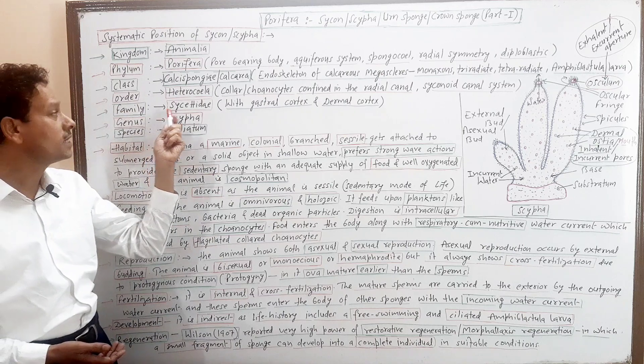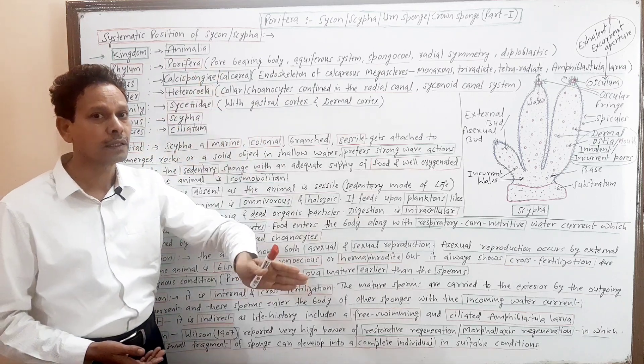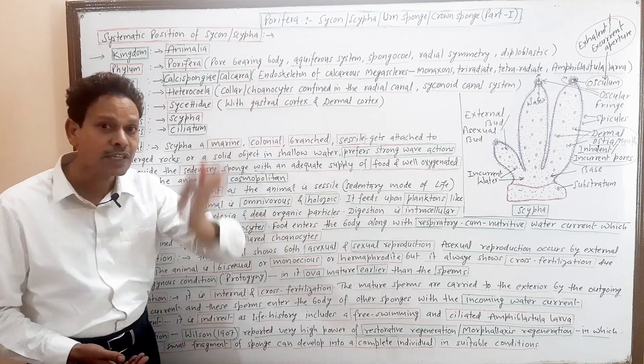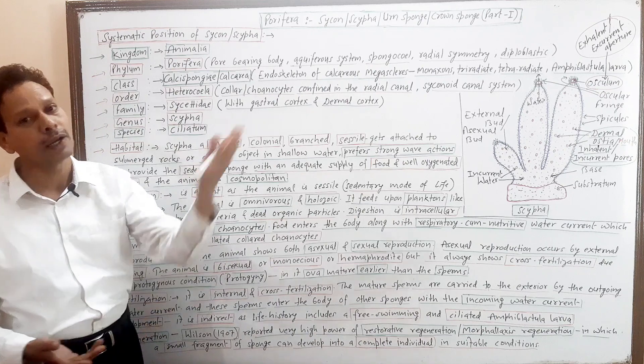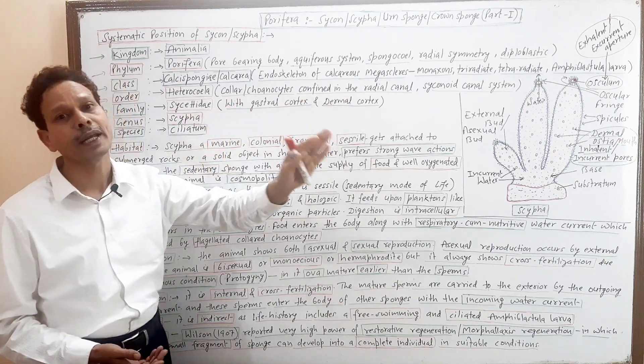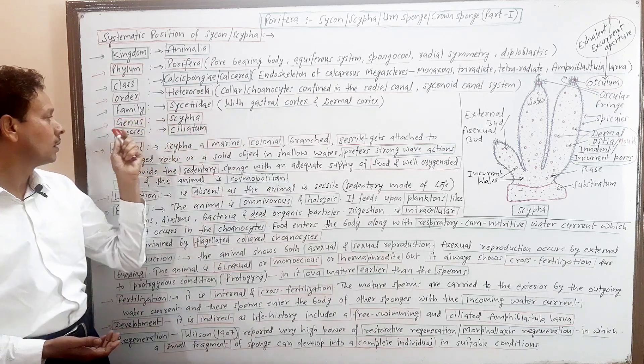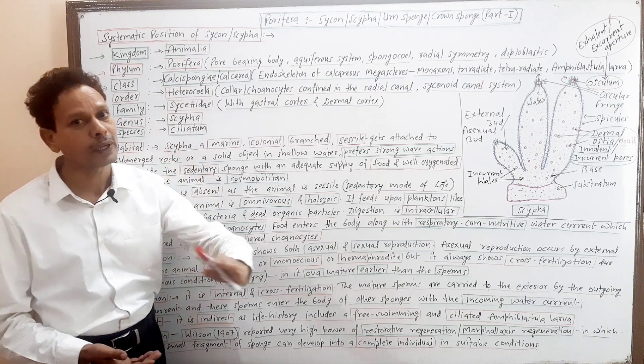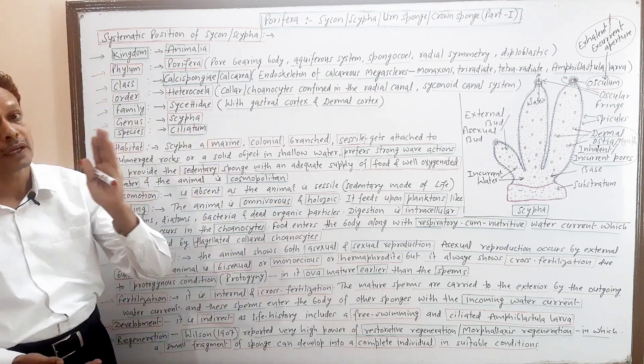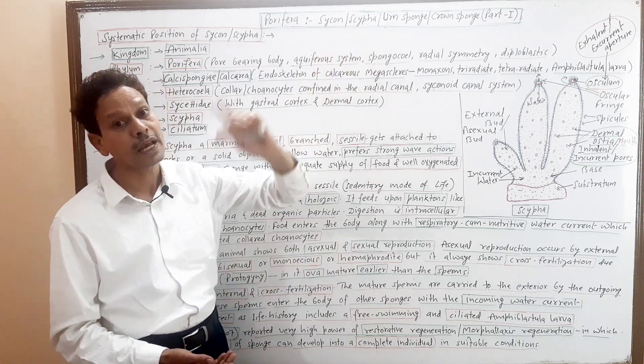Family Sycettidae - means both cortex, outer dermal cortex and gastral inner wall both are well developed. Gastral as well as dermal cortex are well developed. Genus Sycon, species ciliatum. We are covering BSC students' phylum Porifera type study. This type study discusses Sycon Scypha.